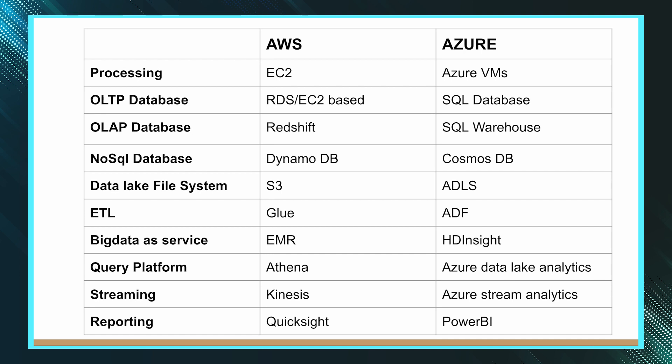For big data as a service, EMR in AWS is a Spark-based platform, and HDInsight is a similar service in Azure. Databricks is available in both AWS and Azure as a service, so you can choose Databricks on behalf of EMR or HDInsight. Databricks is available in both platforms, so you can use it on either cloud.